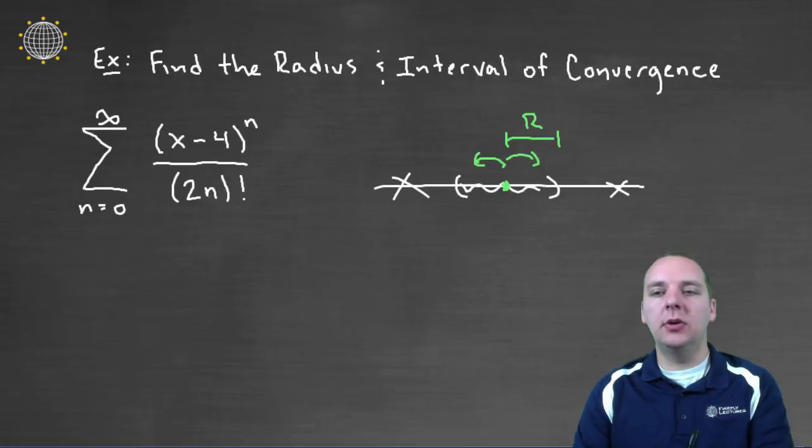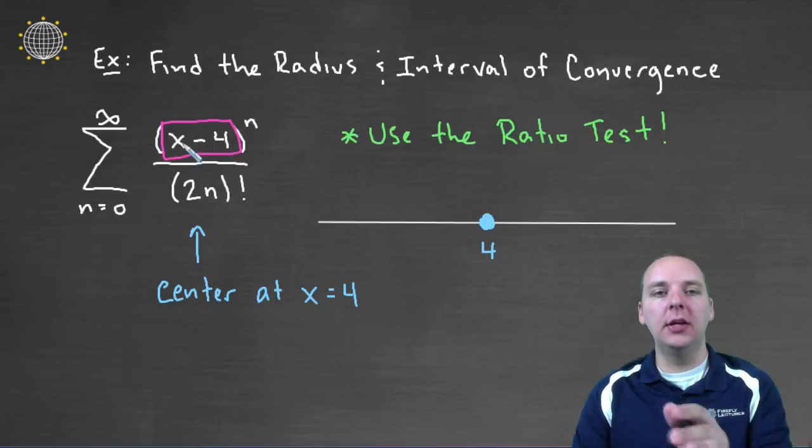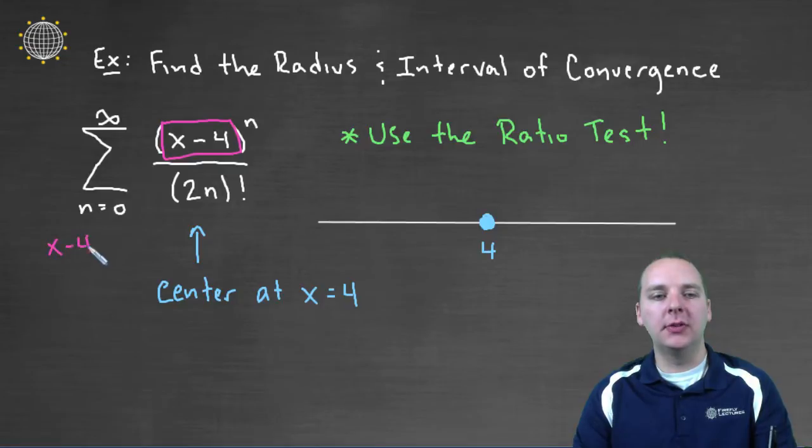So how do we do this? Well, there's a couple things we can do to begin. The first thing is to figure out, where is this guy centered? That's what we talked about in the previous video. To see where it's centered, we look at the term inside the parenthesis that contains the x, and we set it equal to zero. So if x minus four equals zero, then x equals four.